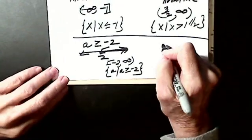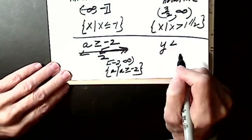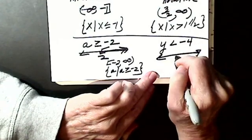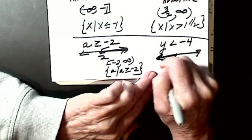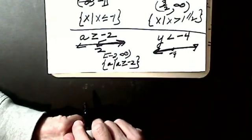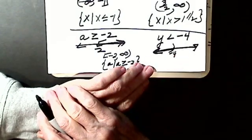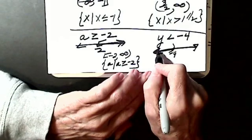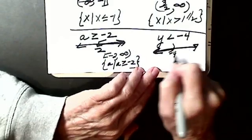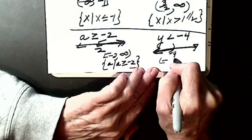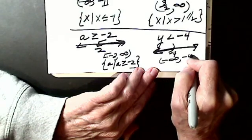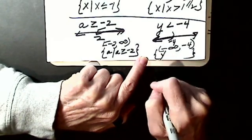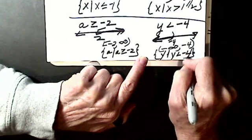Let's do y is less than negative 4. I graph it — here's negative 4, less than goes this way. I don't have or equal, so it's a parenthesis. For interval notation: parenthesis negative infinity to negative 4, parenthesis. For set builder notation: y such that y is less than negative 4.